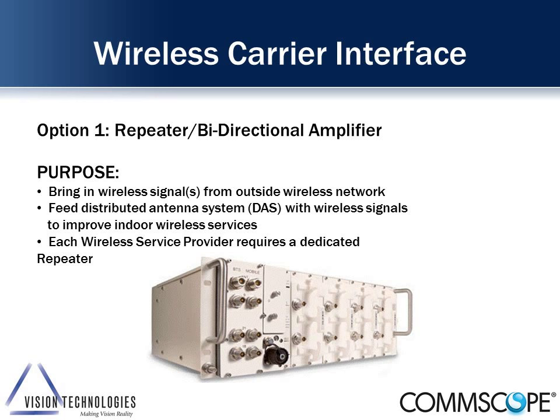Under option one, that's the repeater or bidirectional amplifier. Each unit only supports the specific frequencies of a specific carrier. So if I was doing AT&T, Verizon, Sprint, and T-Mobile, I would need four different sources to feed the in-building wireless system.